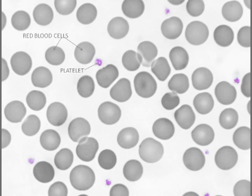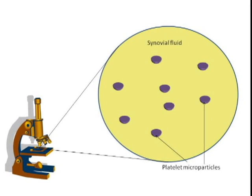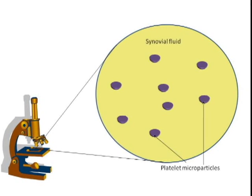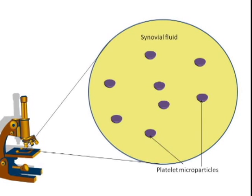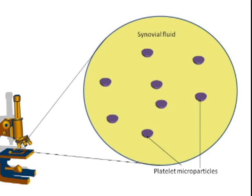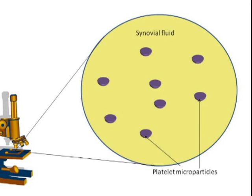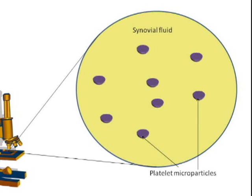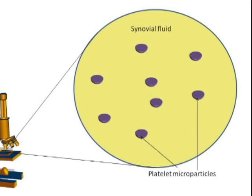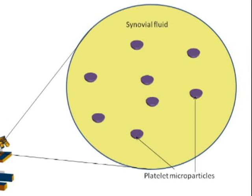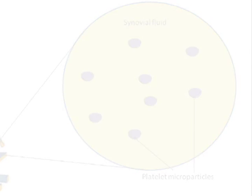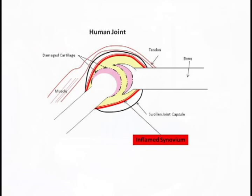When the research team looked at the samples using a high-powered microscope, they noticed something odd. They did not see platelets as they expected, but instead saw a large quantity of microparticles. These microparticles contained the platelet marker, which meant they had to originate from platelets. The team was now curious as to the effect these particles could have in causing joint inflammation.